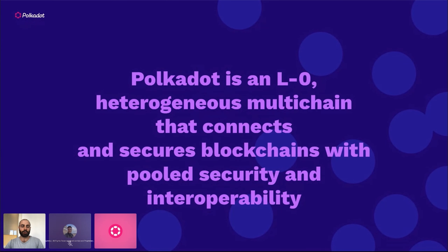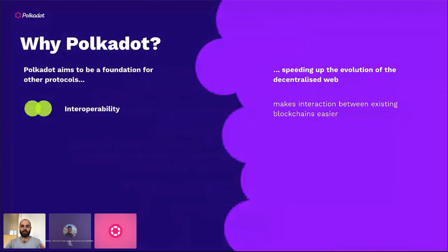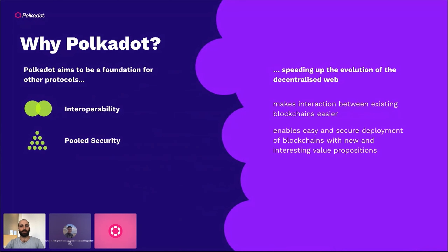Why Polkadot? Why this layer-zero heterogeneous chain? Interoperability is super important — bringing all those isolated blockchains together creates an ecosystem of different types of blockchains for developers to build on. Pooled security is also a new paradigm: before, you had to develop your own network and reach a certain network threshold to be considered secure. Pooled security allows new ideas to be developed quickly, connecting to the Polkadot ecosystem and having the same security as an already established network.